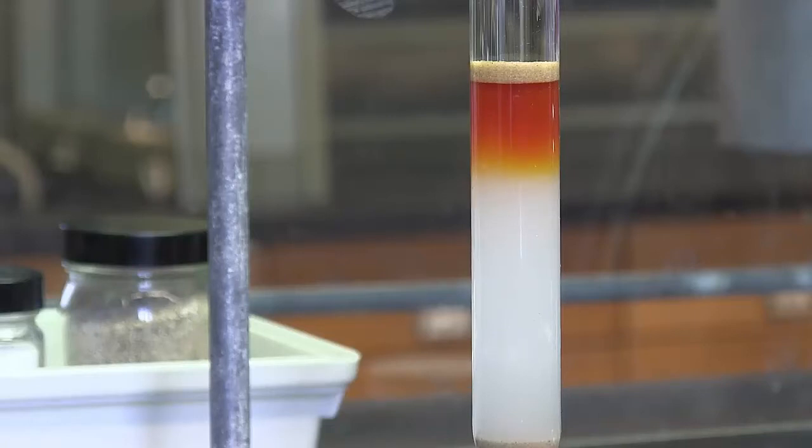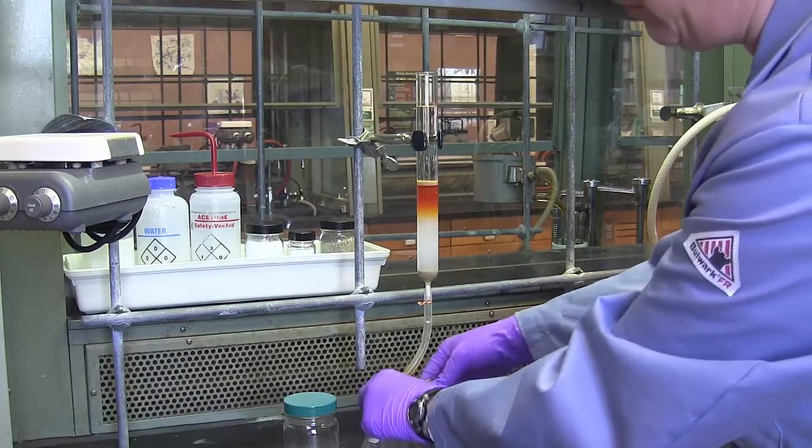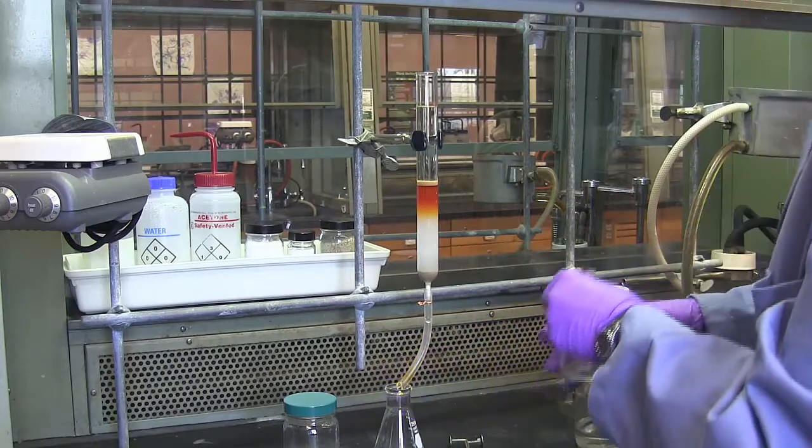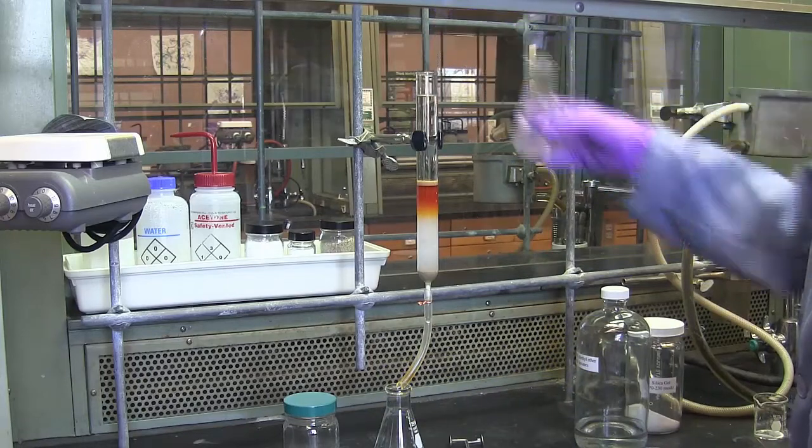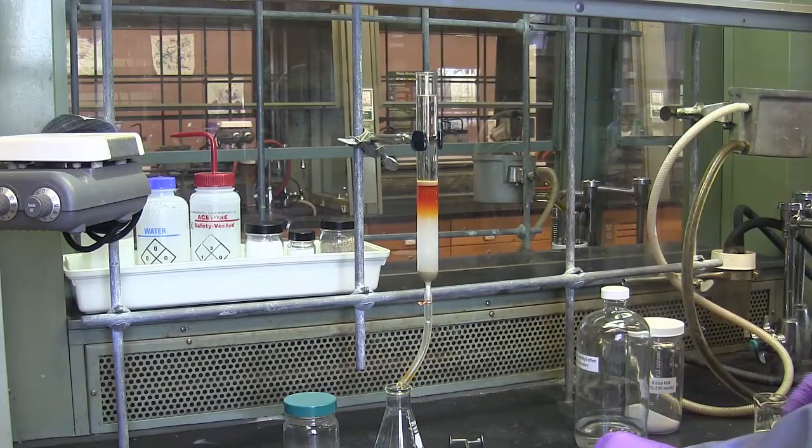When the components begin eluting, you would simply switch collection flasks to collect each band as it elutes. There's clean solvent coming out of the column now. You could begin collecting your first band now, but it's nothing but solvent that would need to be evaporated on a rotavap, which takes time. So I typically wait until the first component approaches the bottom of the column before I begin collecting. As long as a sample is not yet eluting from the column, you can recycle your solvent. Once bands begin to elute, do not recycle the solvent onto the column.